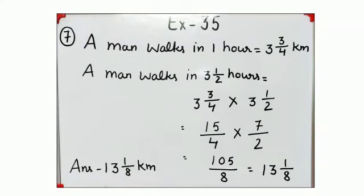Distance covered by a man in one hour is given. You have to find distance covered in 3 and 1 by 2 hours. It means you have to find more value. To find more value we will multiply.